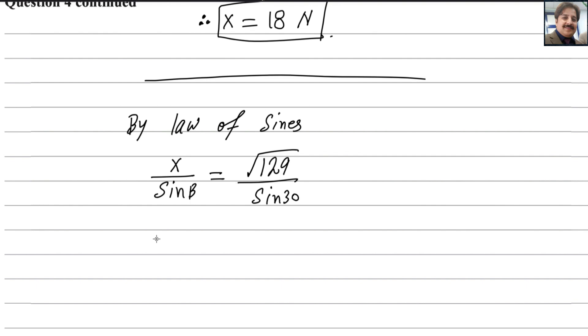Best thing you take the reciprocal of both sides to bring it up. So it can be written like that, sine beta divided by X, X is 18, and sine 30 divided by root 129. Just flip both sides.